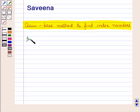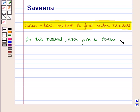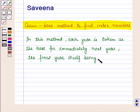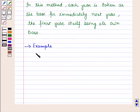In this method, each year is taken as the base for the immediately next year, and the first year itself being its own base. Now let us discuss it with the help of an example.